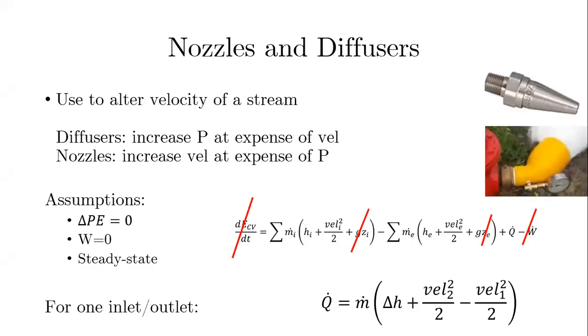So let's start off with nozzles and diffusers, which have pictures, generic pictures here, top right. Basically what they do is they change the area of flow. By playing around with the pressure, you can increase or decrease the velocity of the fluid. In the case of a diffuser, you increase the pressure but the velocity goes down. In the case of a nozzle, you increase the velocity but the pressure goes down.